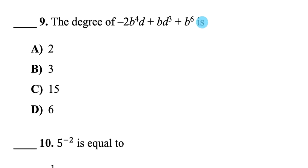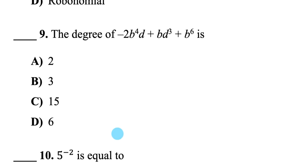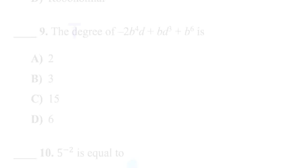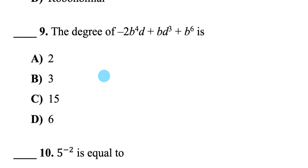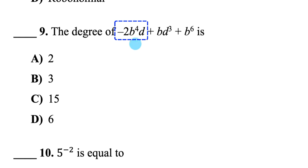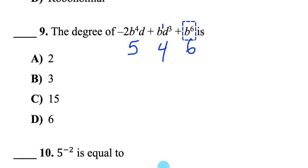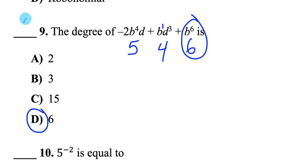Question 9 uses that same polynomial expression and asks for its degree. The degree of a polynomial equals the degree of the highest degree term. The first term has degree 4 plus 1 = 5, the second has degree 1 plus 3 = 4, and the last term has degree 6. The highest is 6, so the degree of the polynomial is 6. A common mistake is adding the degrees of all the terms — it's not 15, it's the highest degree term, which is 6.